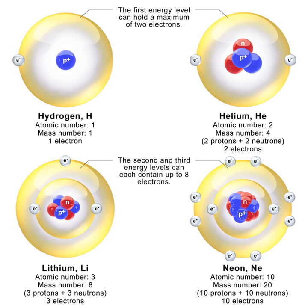High-energy neutrons have much more energy than fission energy neutrons and are generated as secondary particles by particle accelerators or in the atmosphere from cosmic rays. These high-energy neutrons are extremely efficient at ionization and far more likely to cause cell death than X-rays or protons.